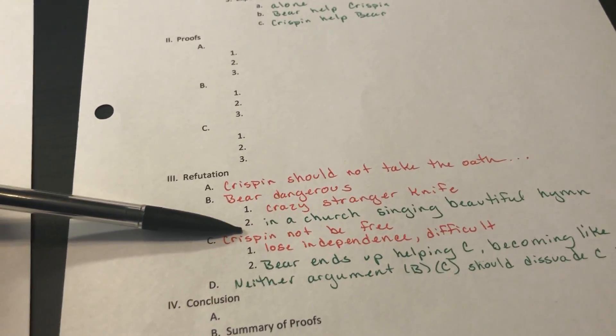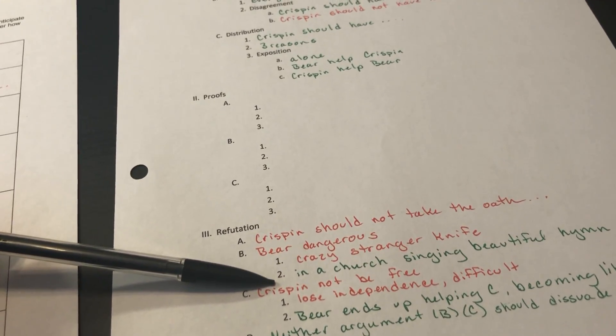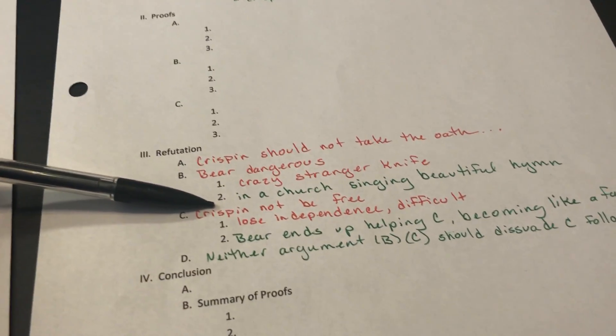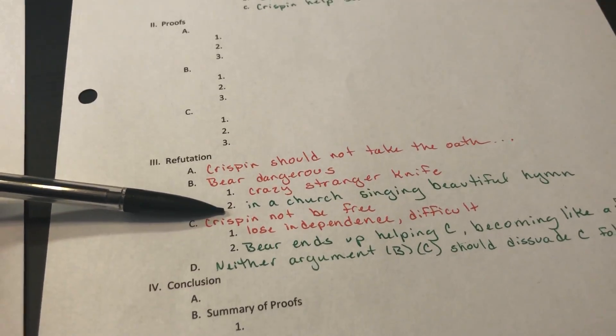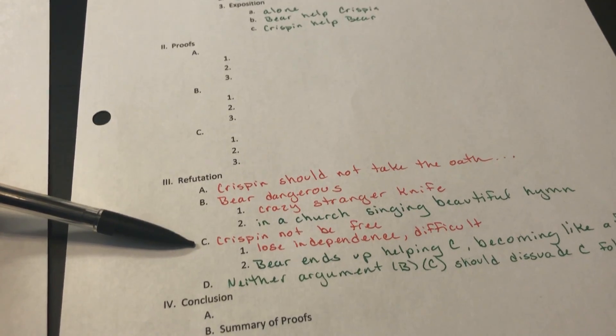Here's what that looks like. I kind of put all three of our reasons together into one. We had said that he seemed like he was crazy, he was a stranger, and he had a knife. So I put that he's a crazy stranger with a knife. It'll be better written when we go to write our actual paper. Here's our counter. But after all, he is in a church and he's singing a beautiful hymn, which gives indication that he is worshiping God and could possibly be a good man that would help Crispin.